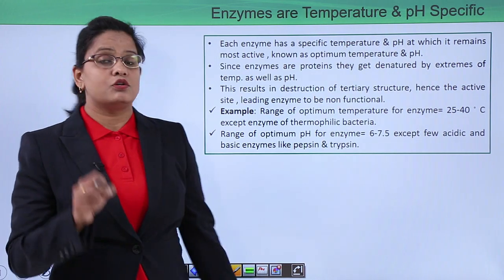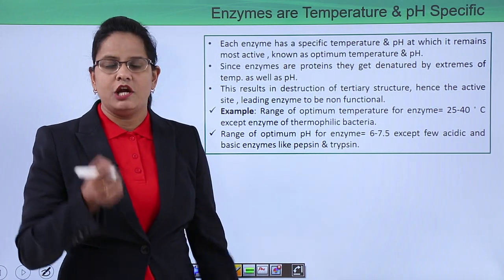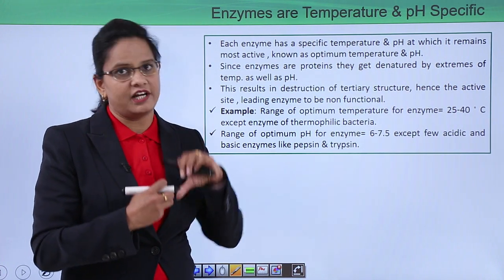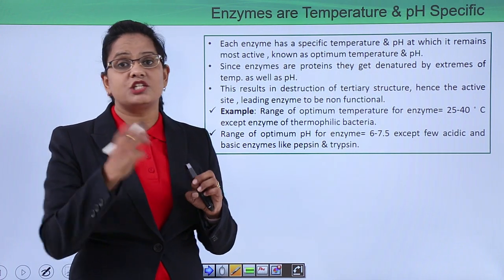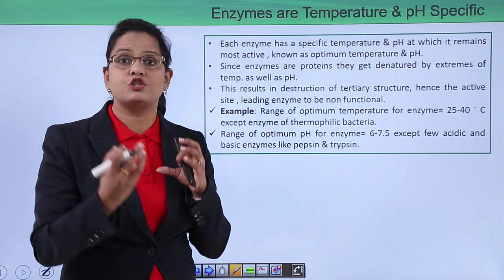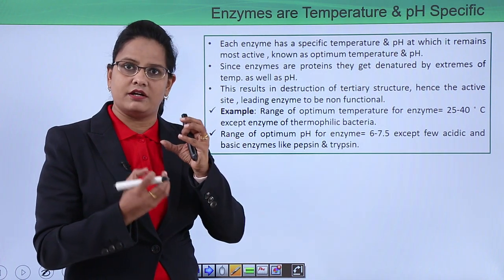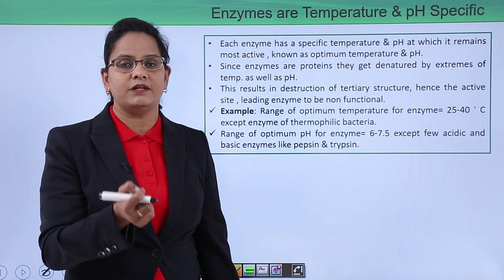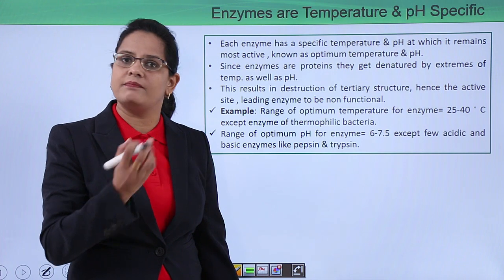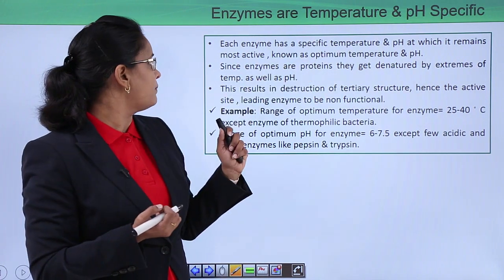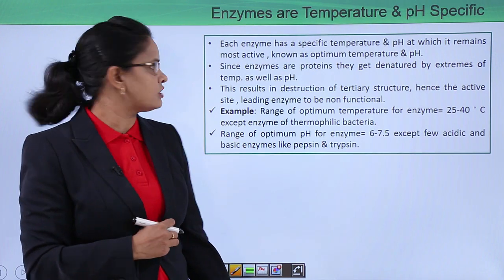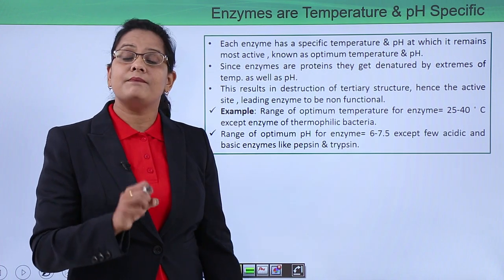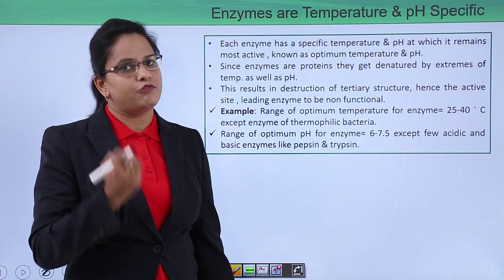Enzymes work at a specific temperature and pH. Since they are proteinaceous in nature, the active site has amino acid residues formed by three-dimensional folding. If the temperature and pH reach extremes, the structure gets distorted and the substrate can no longer fit inside. The active site is disturbed, so the enzyme's function is reduced or it becomes non-functional. Enzymes get denatured by extremes of temperature, which results in destruction of the tertiary structure and the active site.